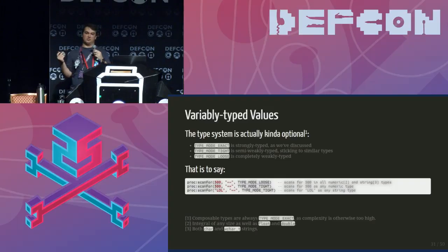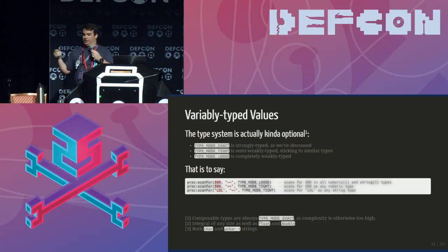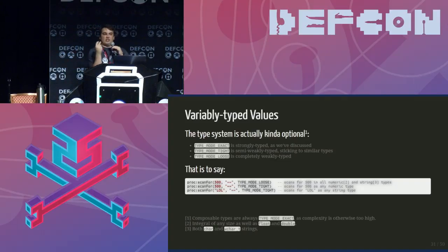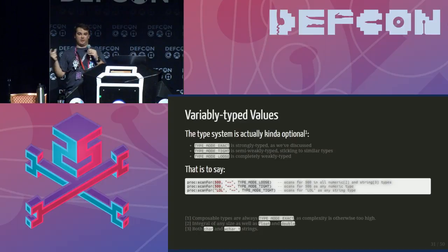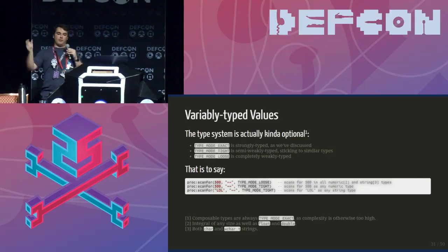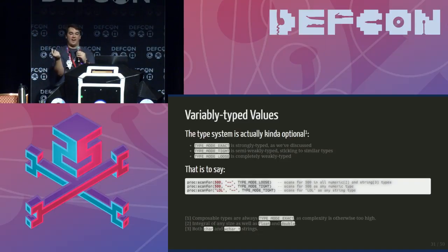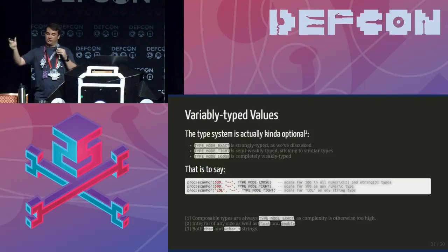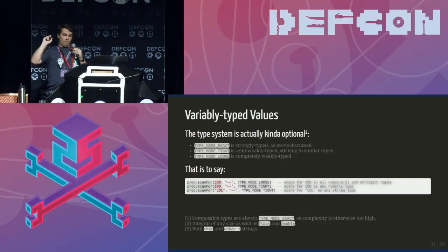There are also variable typed values. You can specify type mode 'exact' — only what's supported in structures — or type mode 'type', which scans other values of similar types. If you put 500 with type mode 'type', it does all integer and floating types. Type mode 'exact' only does the specific integer type you specify. Type mode 'loose' searches for 500 as any integral type of any signedness, floating point types, or even strings that say '500'. And if you search for a string with type mode 'type', it searches both wide and single byte.